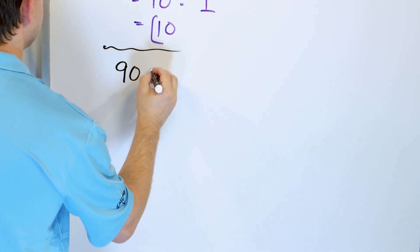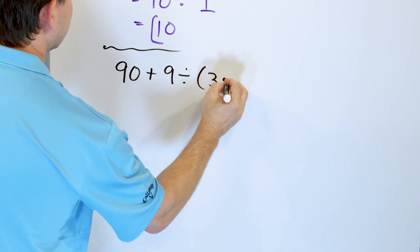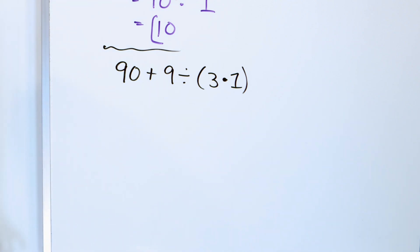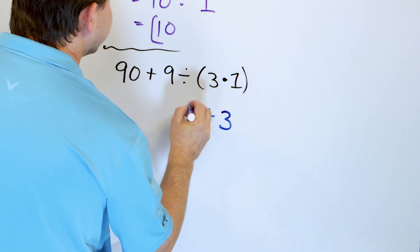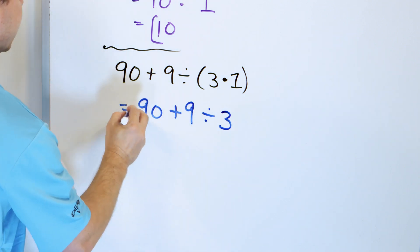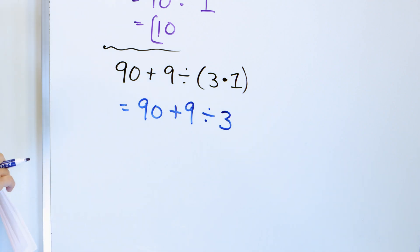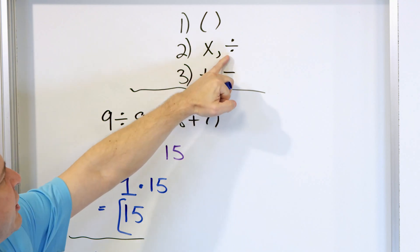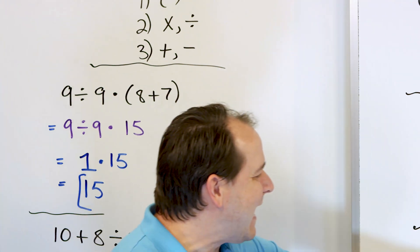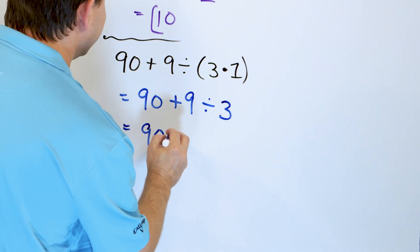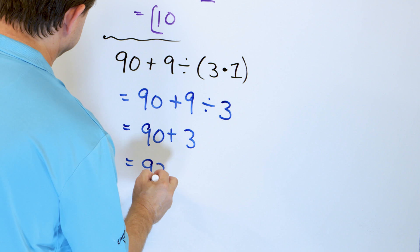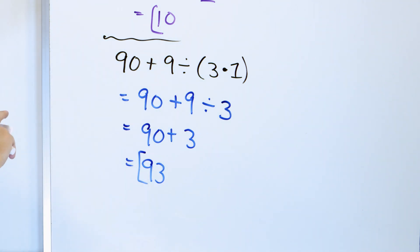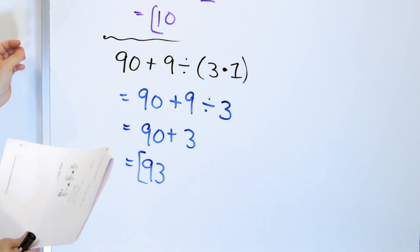Let's take a look at 90 plus 9 divided by 3 times 1. First thing is always parentheses — inside we have 3 times 1, so we do that first. 3 times 1 is 3; everything else gets rewritten. Now we have addition and division. Division comes before addition, so we do 9 divided by 3, which is 3. Then finally 90 plus 3 is 93. The answer is 93. If you do these in any other order, you will almost certainly get the wrong answer.